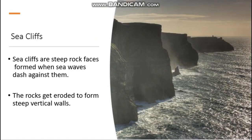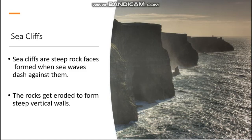First one is the sea cliff. What do you mean by sea cliff? On seeing this picture, it looks like a steep rock. Sea cliffs are steep rock faces formed when sea waves dash against them. These rocks get eroded to form steep vertical walls.